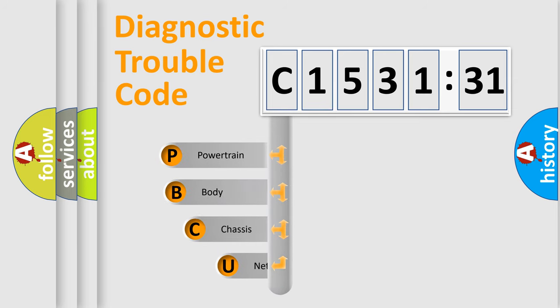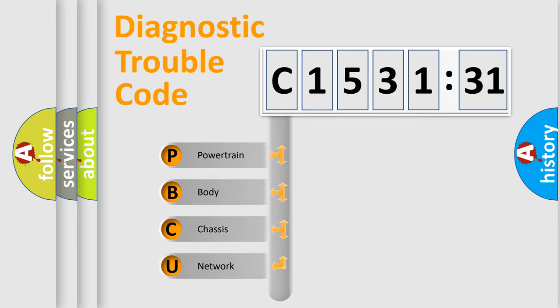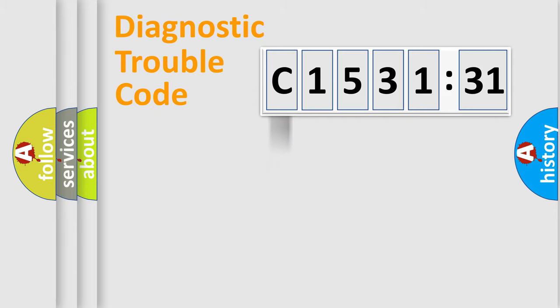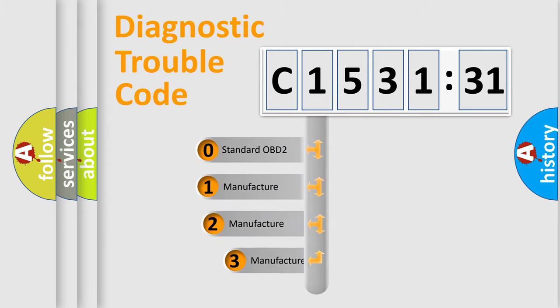First, let's look at the history of diagnostic fault code composition according to the OBD2 protocol, which is unified for all automakers since 2000. We divide the electric system of automobile into four basic units: Powertrain, Body, Chassis, and Network. This distribution is defined in the first character of the code.